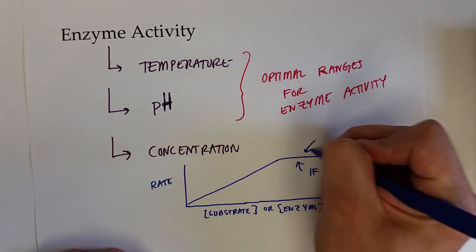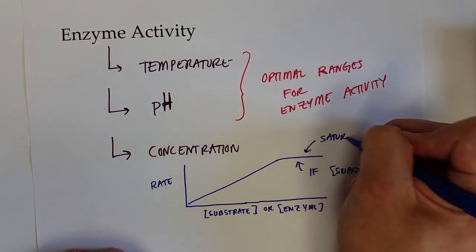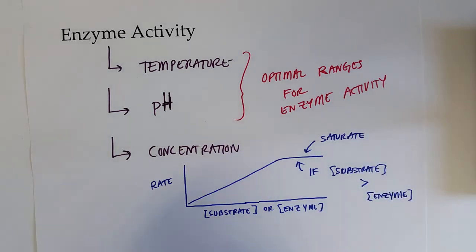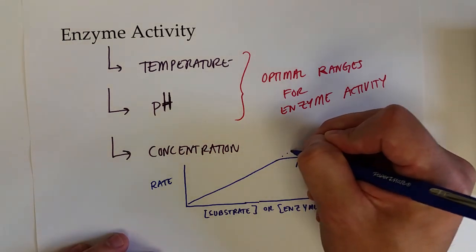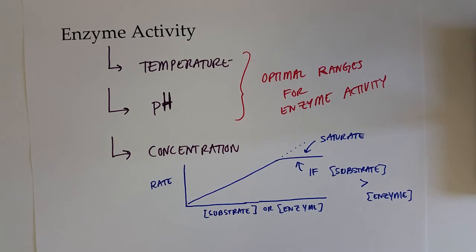So essentially you can saturate your enzyme activity with too much substrate concentration. But if you were to add more enzyme to this, the rate would start to increase again now that there are more enzyme protein molecules that can catalyze more chemical reactions.